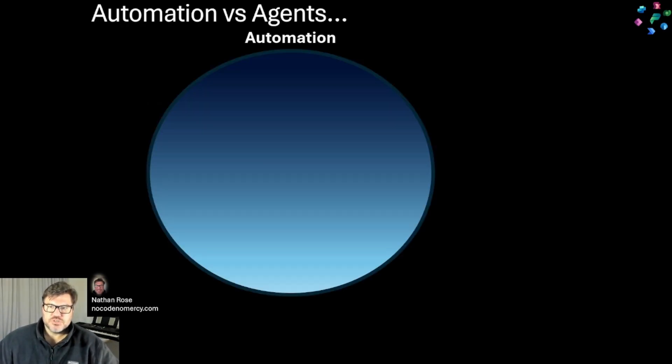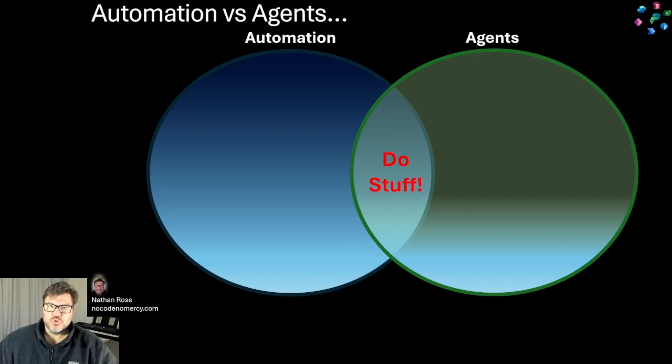When we look at traditional automation versus AI agents, they both do stuff, but they're doing fundamentally different things. Traditional automation is rule-based, deterministic, precise, static,